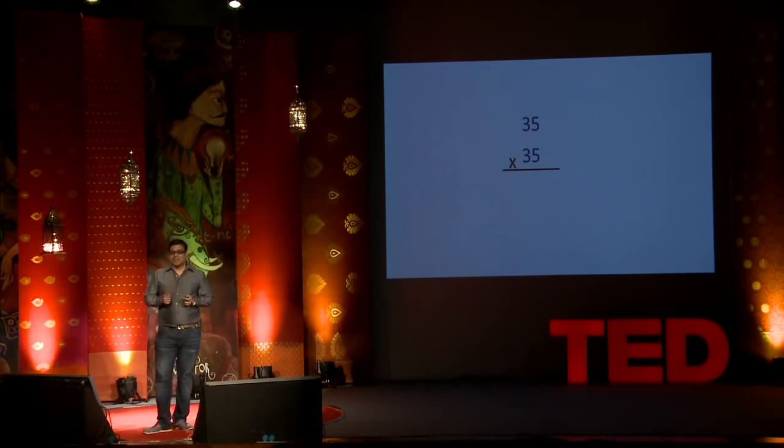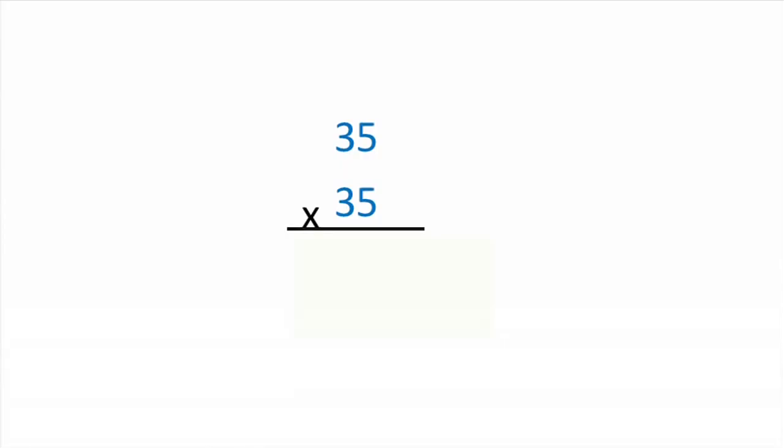So let's do some simple squaring. We got 35 square or 35 times 35. So what we essentially do is we got 3. What comes after 3? Exactly. And we multiply 3 and 4 together. That gives us 12. That's the first part of the answer. And we simply square 5. That gives us 25. So our exact answer becomes 1225.